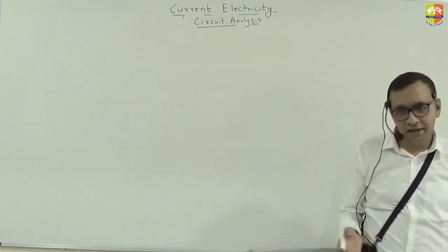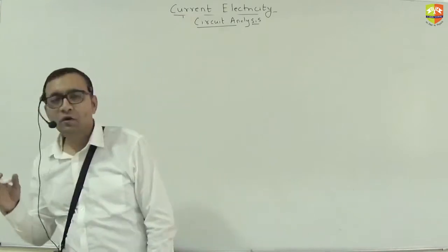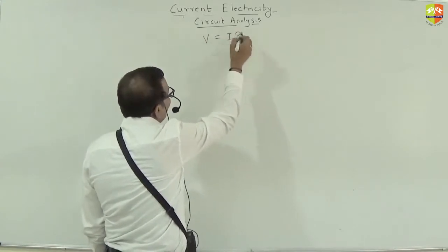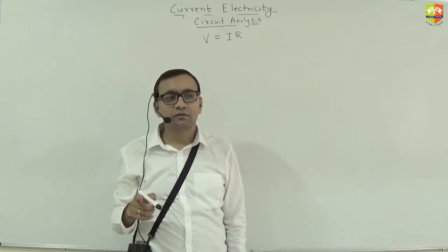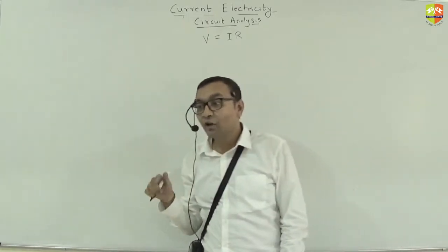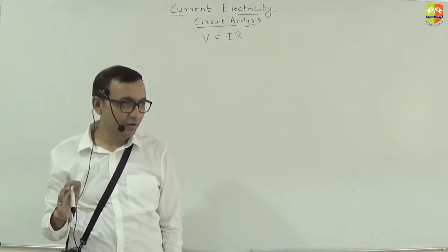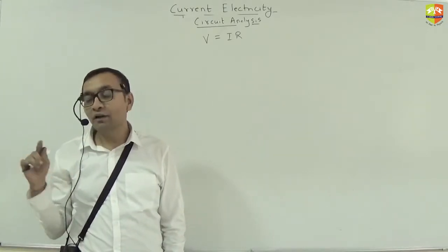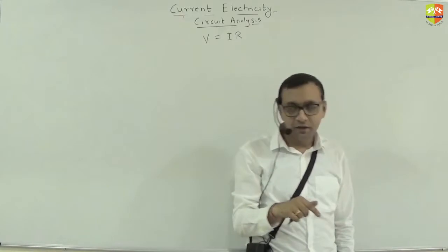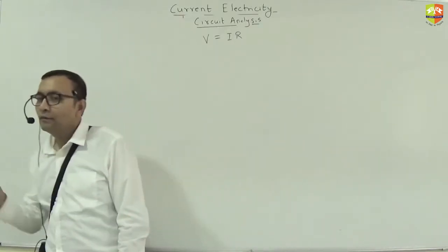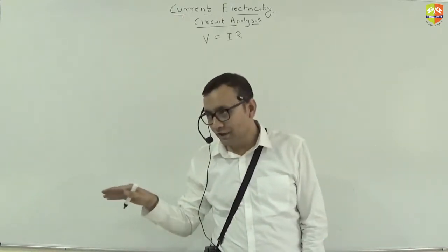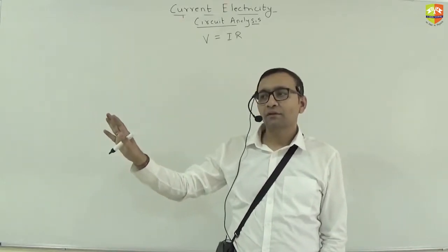We have Ohm's law — a linear relation between voltage and current — which says V = IR. Here V is the potential difference across the resistance, not just any potential difference. I is the current through the resistance. So if a resistance is connected, the potential difference across it equals current times resistance. Along the direction of current flow through a resistance, potential will decrease.